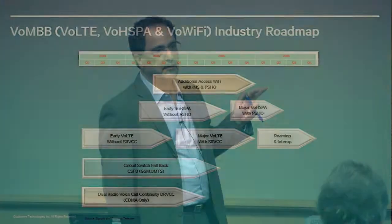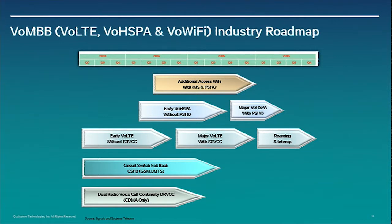A snapshot of where this roadmap is heading: the bottom two stages are already passed — SVLTE, CSFB, and VCC, the dual-radio technique introduced for CDMA operators because they couldn't do simultaneous voice and data. CS fallback is also mostly gone. Most operators are now moving toward VoLTE, initially perhaps without SRVCC, then adding SRVCC. Roaming and interoperability are important — not just within a single network but inter-operator calls. Voice over HSPA is also of interest as part of Voice over Mobile Broadband because of packet-switched handoff efficiency. Voice over Wi-Fi is being used by many operators as an offloading technique.